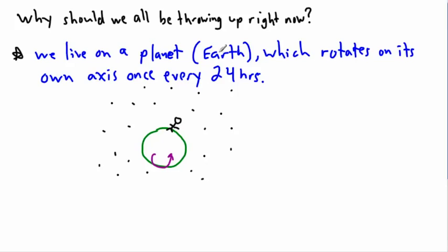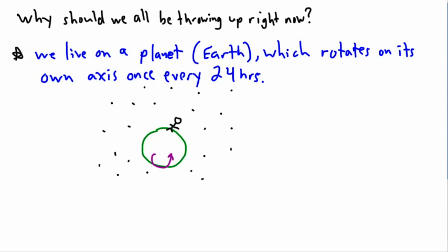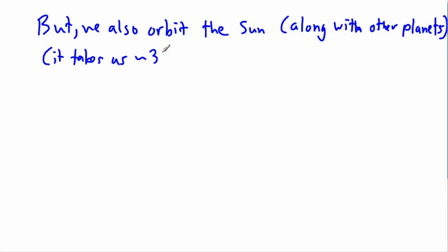But on top of that, not only are we rotating on our own axis on this planet called Earth, but we also orbit the Sun. We have a star called the Sun, and we're orbiting the Sun along with other planets of course. We're not the only planet. We orbit the Sun along with other planets, and it takes us, if we consider one day is 24 hours or one full rotation, around 365 days to orbit the Sun.